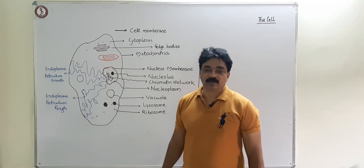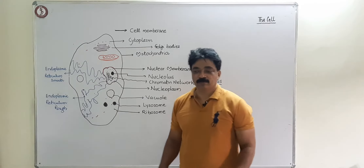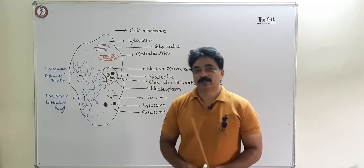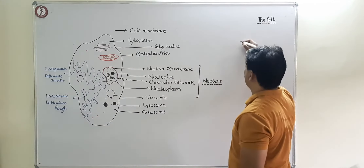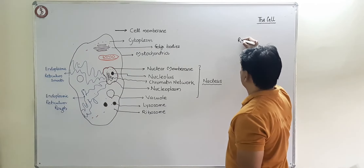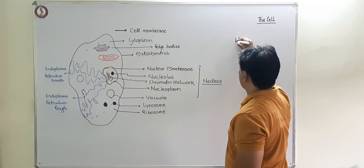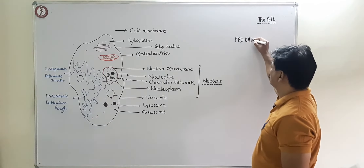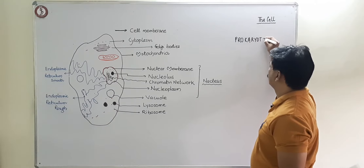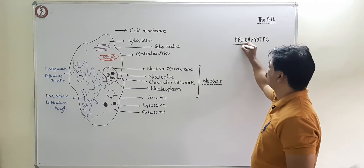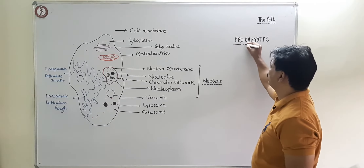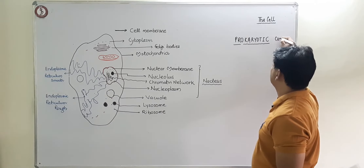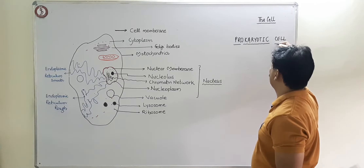First, we need to understand that there are two types of cells. One is called prokaryotic. 'Pro' means first or primitive, and 'karyon' means nucleus. So the prokaryotic cell does not have a well-defined nucleus.